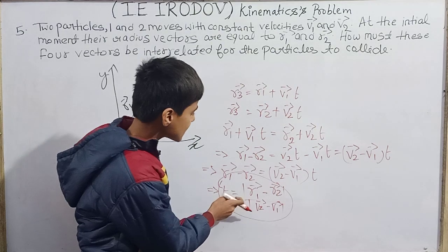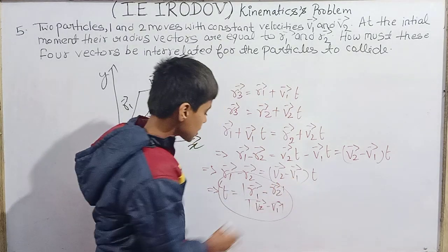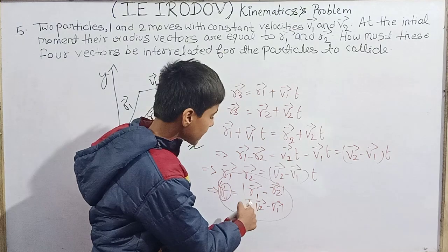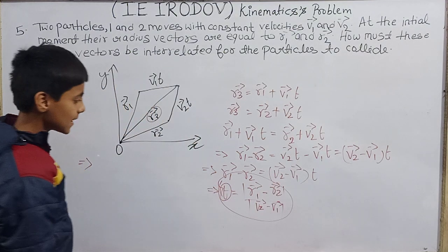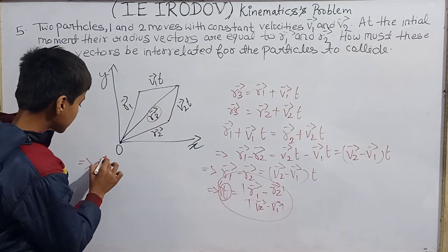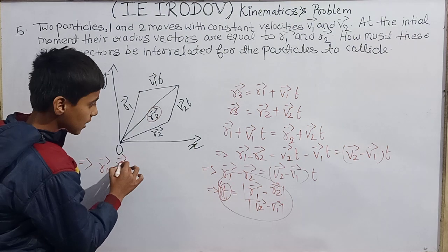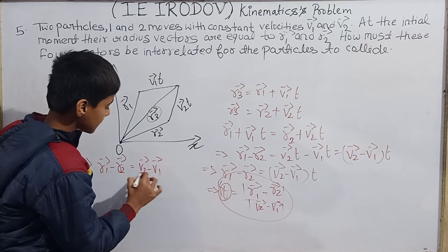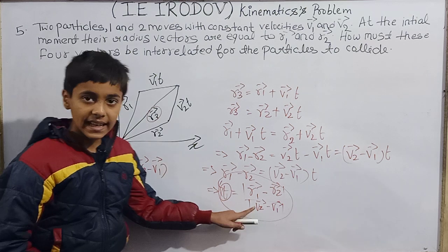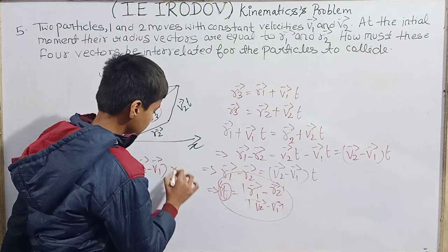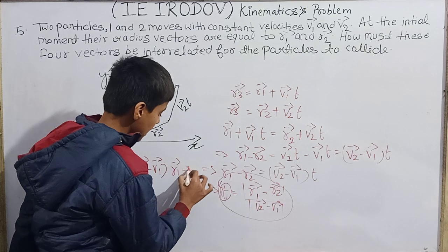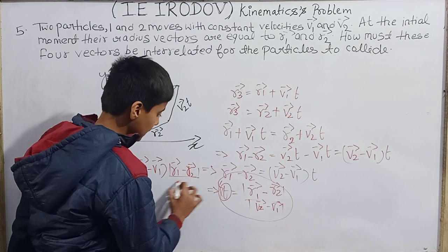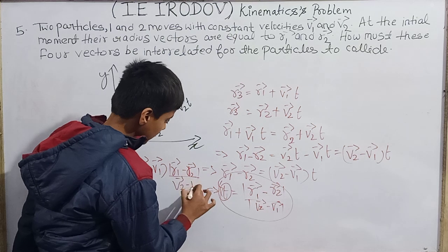Now substituting this value of t back into the equation, we get: vector r₁ minus vector r₂ equals (vector v₂ minus vector v₁) multiplied by |vector r₁ minus vector r₂| divided by |vector v₂ minus vector v₁|. Rearranging, we can bring the magnitude terms across.